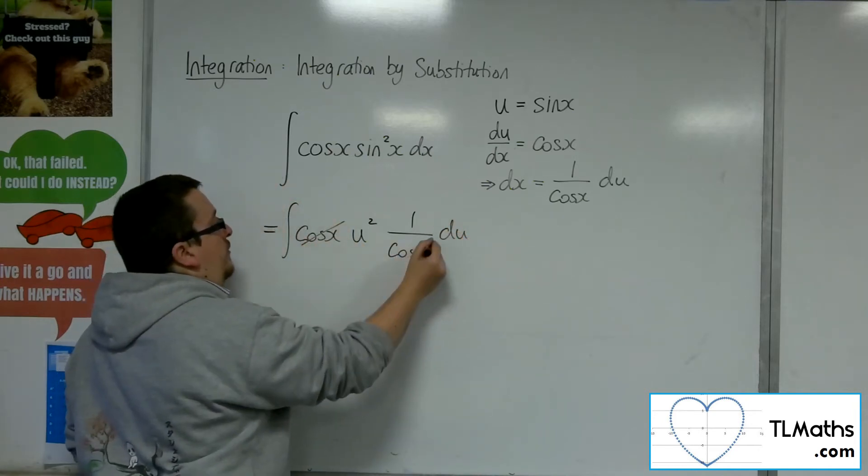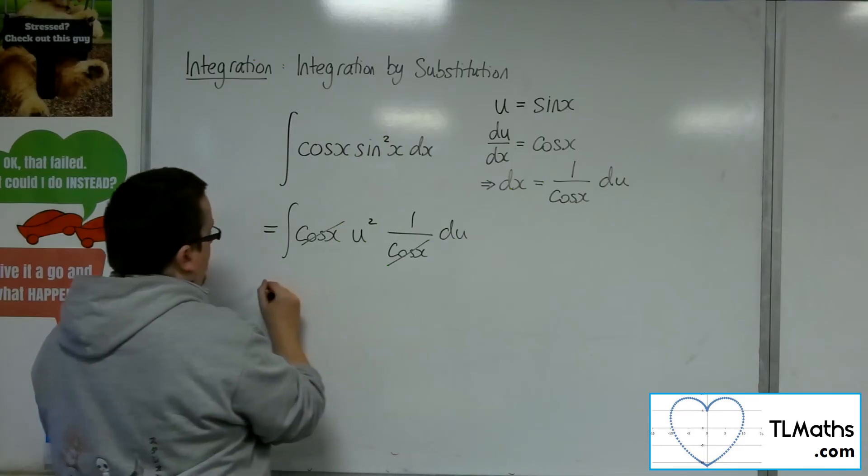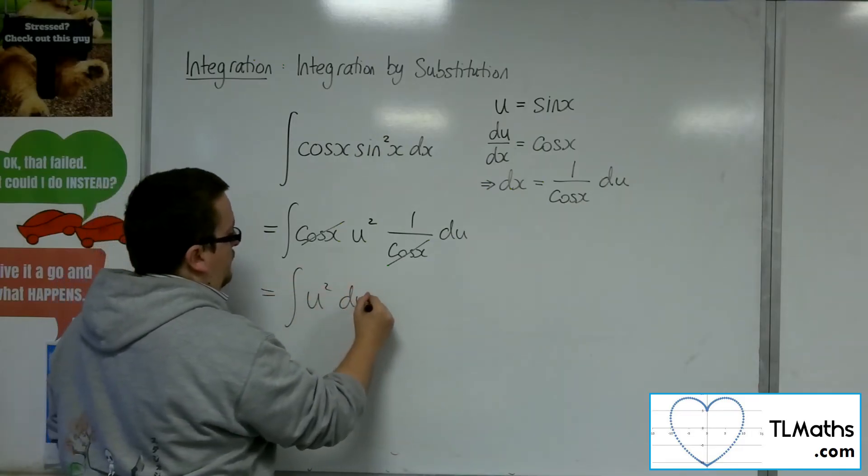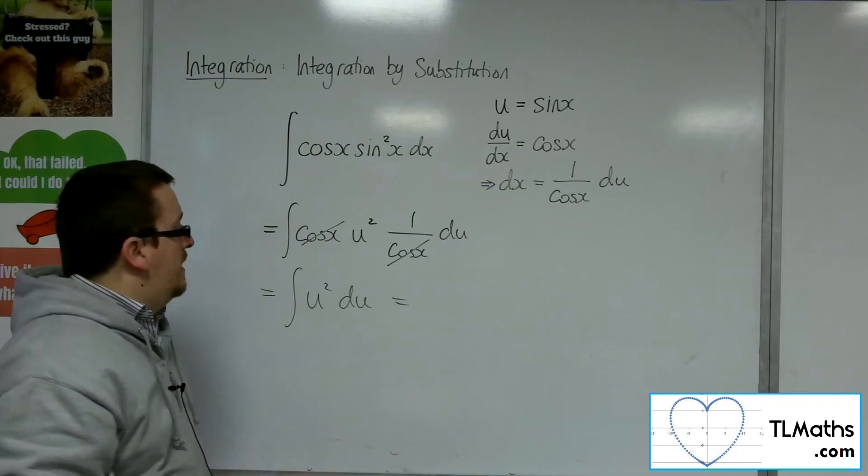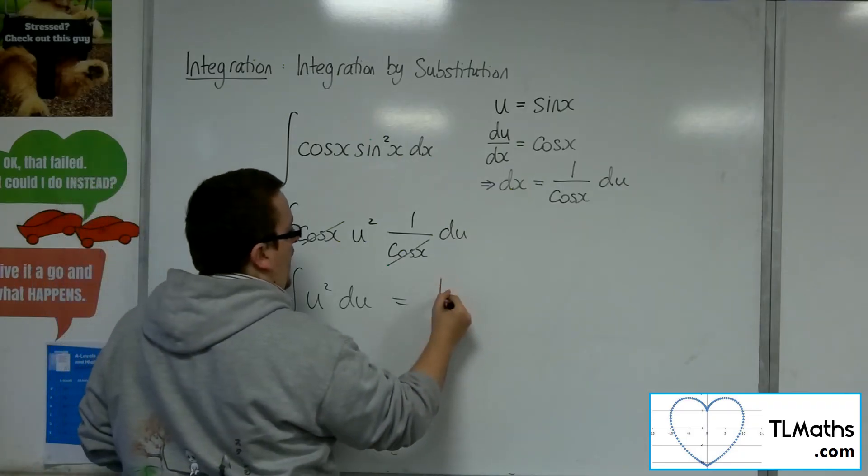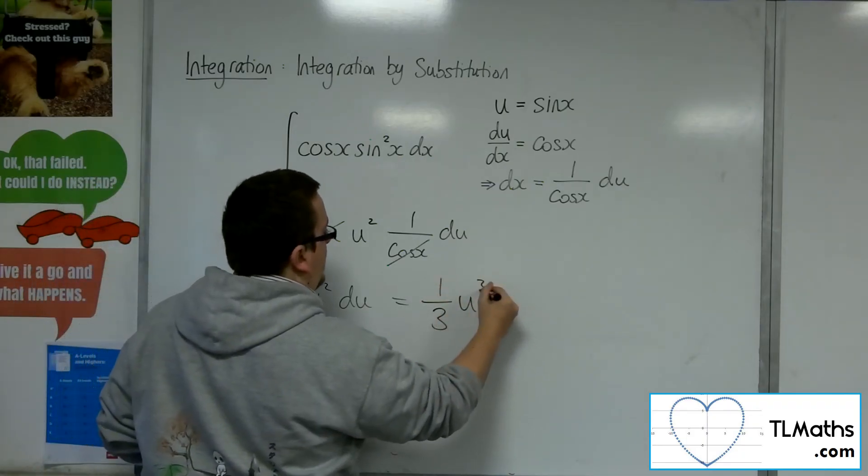Now, the cosine of x will cancel, leaving me with the integral of u squared du, which I could just integrate as I normally would. So adding 1 to the power, dividing by the new power,